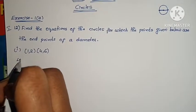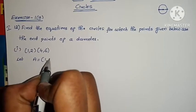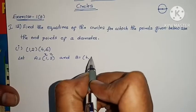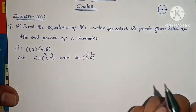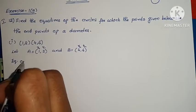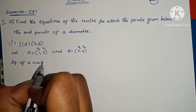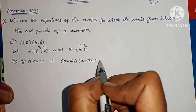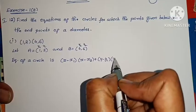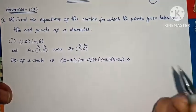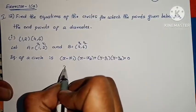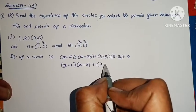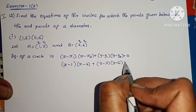Let A equals (1,2) — that is x1, y1 — and B equals (4,6) — that is x2, y2. The equation of a circle is x minus x1 into x minus x2, plus y minus y1 into y minus y2, equals 0. Substituting: x minus 1 into x minus 4, plus y minus 2 into y minus 6, equals 0.